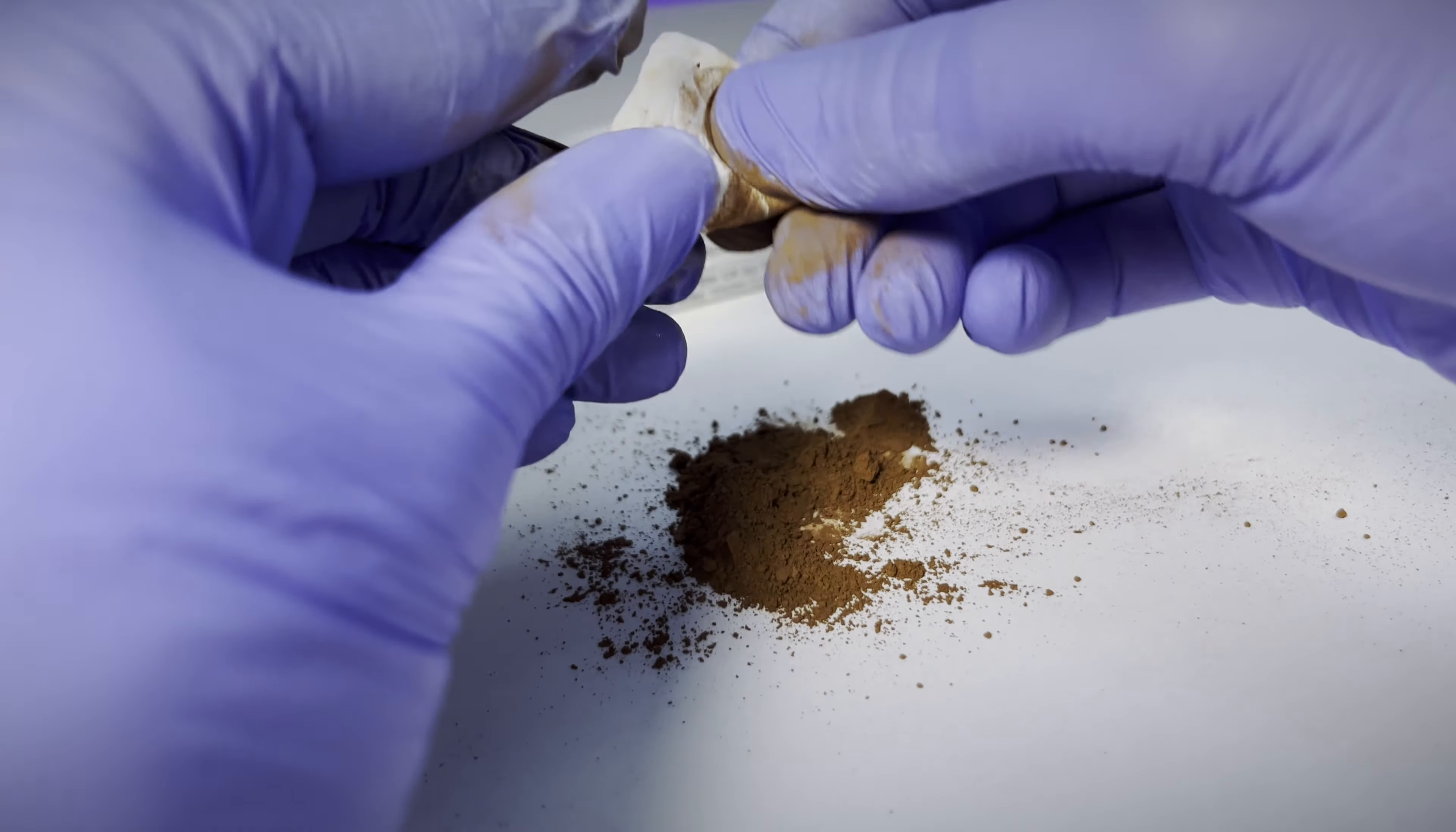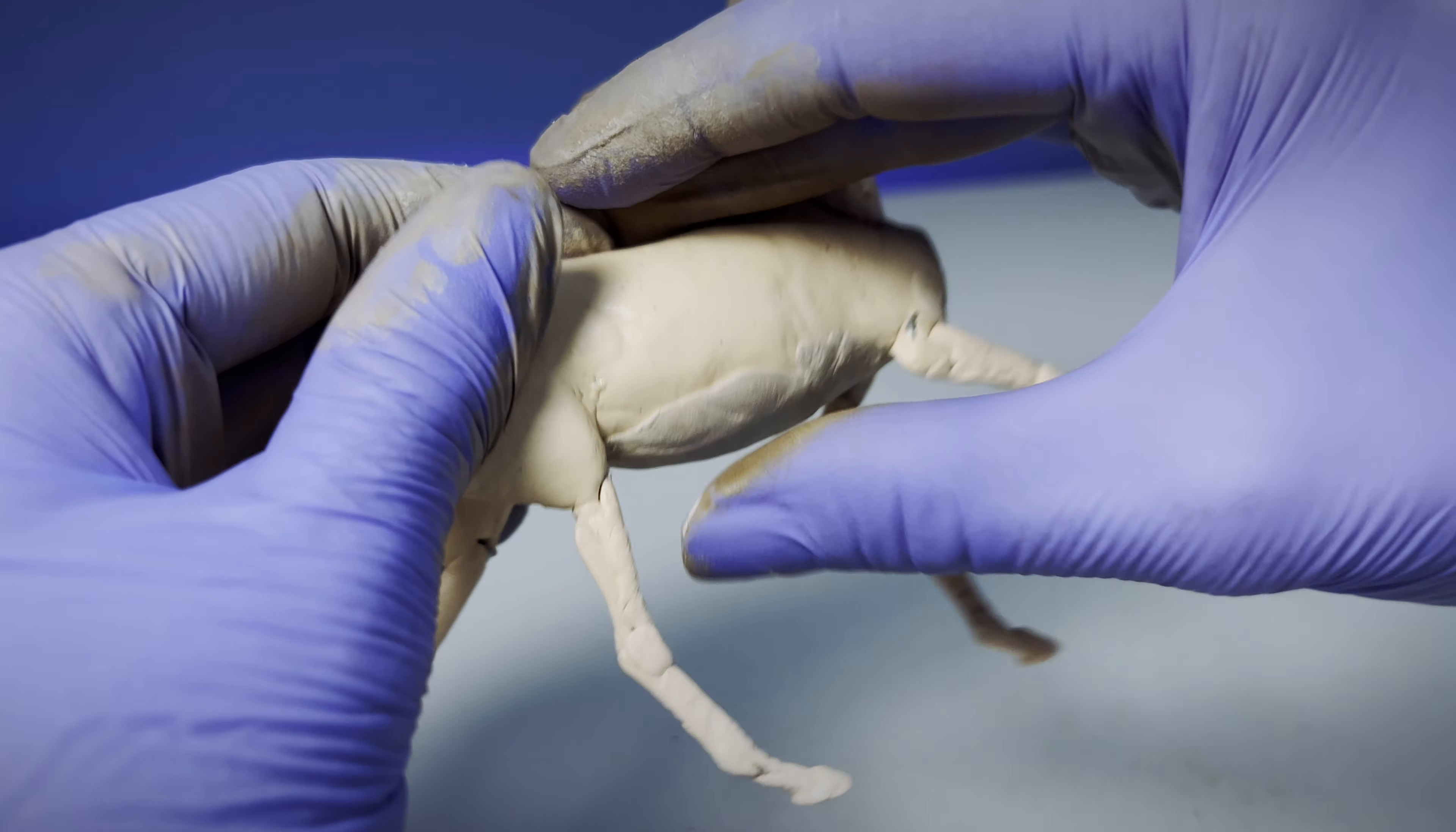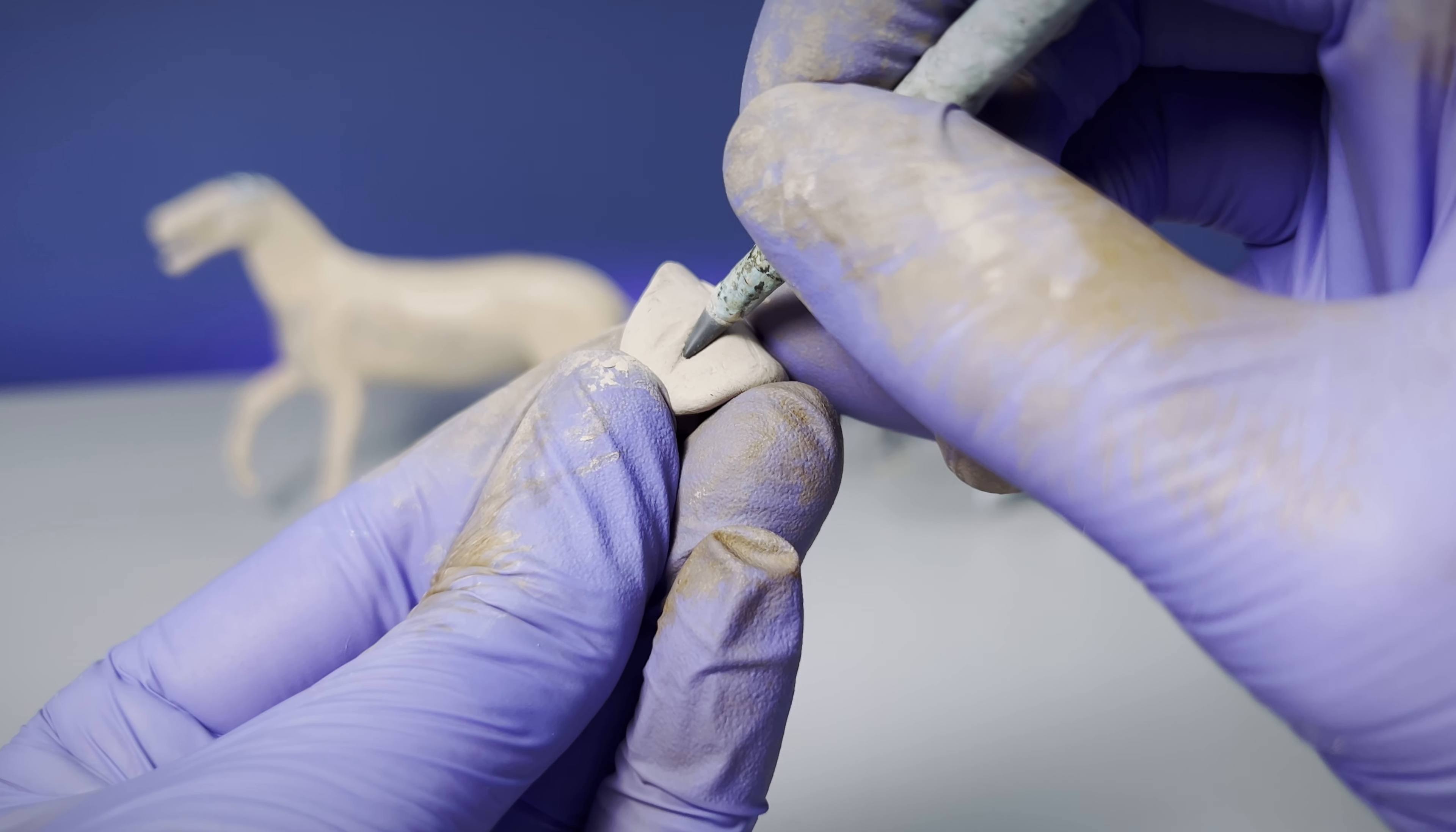I recommend starting with small amounts and mixing thoroughly, then adding more until you get the perfect color and consistency. Speaking of consistency, adding dry pigments will create a stiffer putty, so if you feel Milliput is too soft, this may be a perfect hack for you.